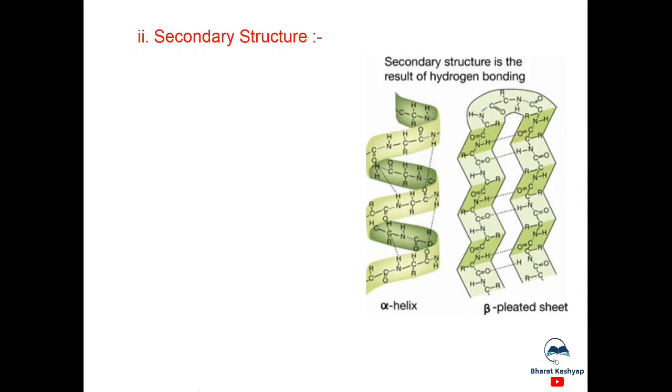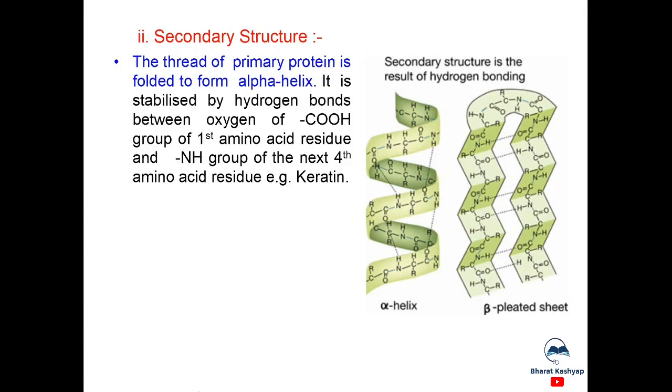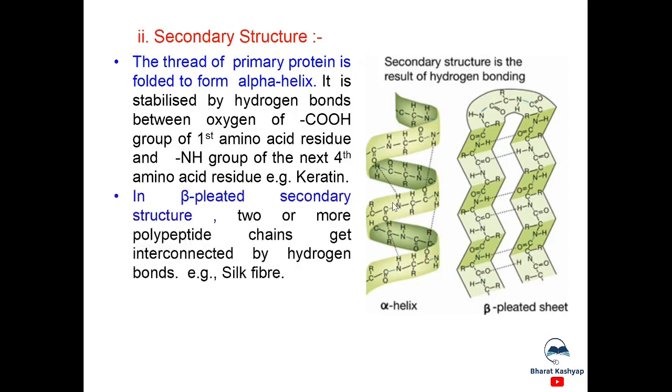Now, next is secondary structure of proteins. Look at diagrams here. The thread of primary protein is folded to form alpha helix. It is stabilized by hydrogen bonds between oxygen of carboxyl group of first amino acid residue and amino group of next fourth amino acid residue, for example, keratin. This is the alpha helix here and this is the hydrogen bond formed between carboxyl and amino group, first and fourth.